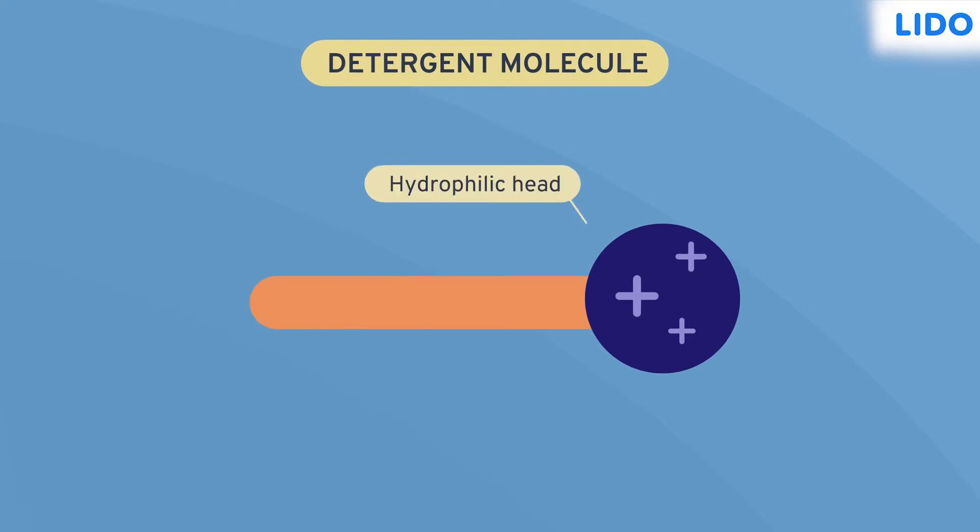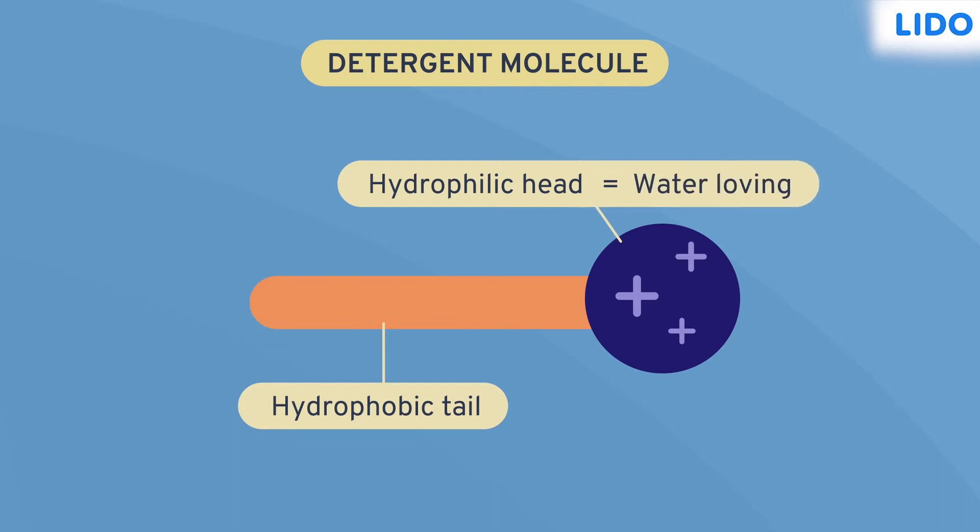If we carefully observe a detergent molecule, it has a hydrophilic head and a hydrophobic tail. From the term itself, we can understand that the head is water-loving and the tail repels water.